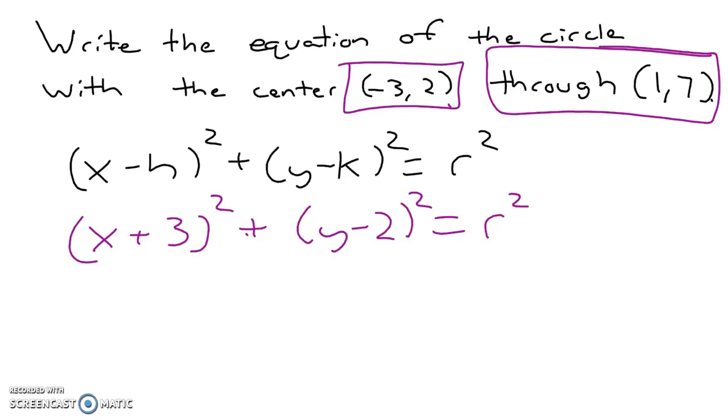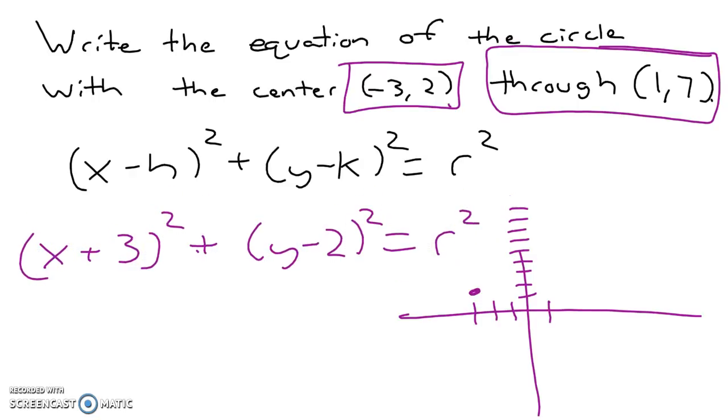The way we do that is the distance formula. In both cases, you have negative 3, 2 for the center. You have 1, 7 for the point. We have 1, 7, which is the point right here. We have negative 3, 2, which is the center, and 1, 7, that is the point right here on the circle.